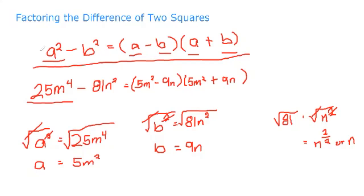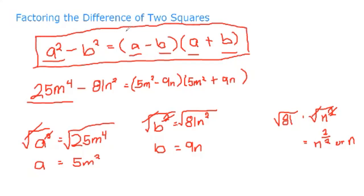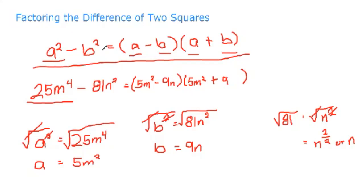Just follow our formula. This is the main formula for factoring the difference of two squares — factoring the difference of two squares.